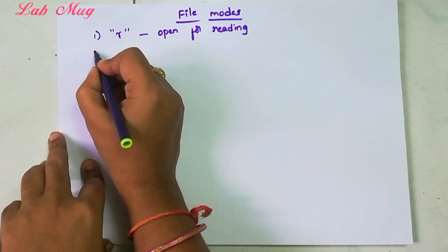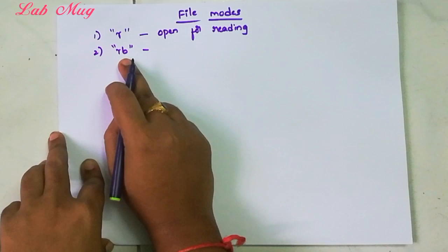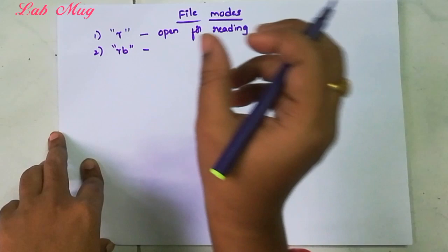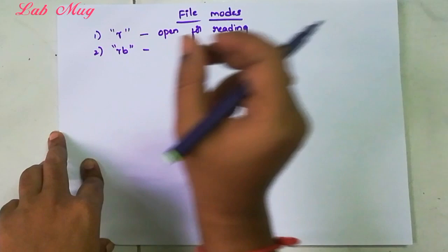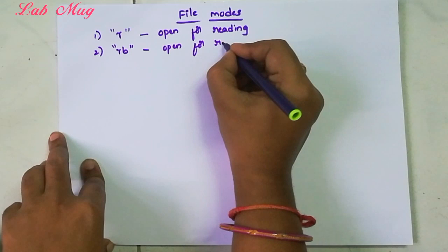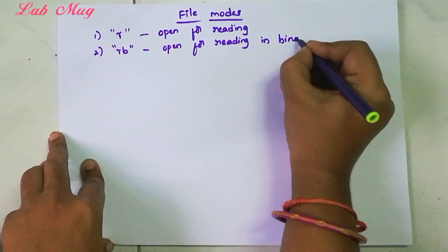Number two is RB. B means binary file, R means only reading purpose. So binary file format only for reading - that's RB. Open for reading in binary mode.